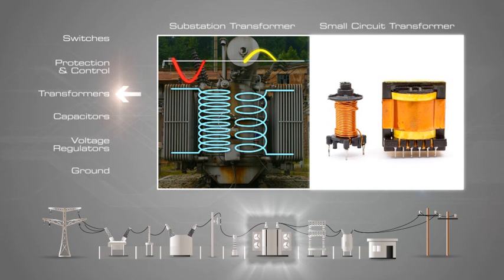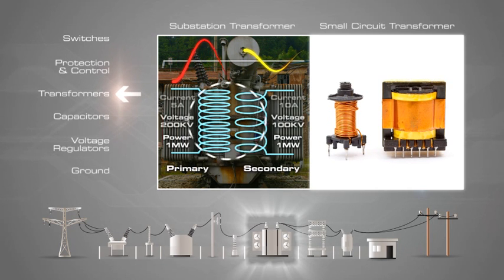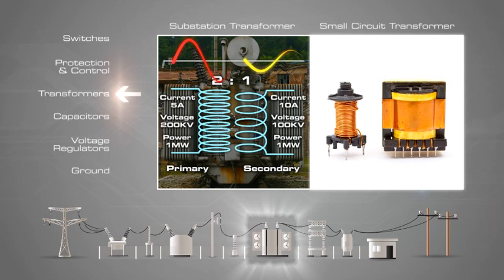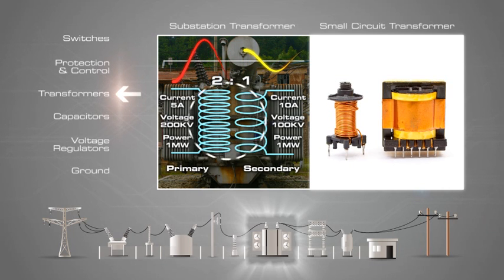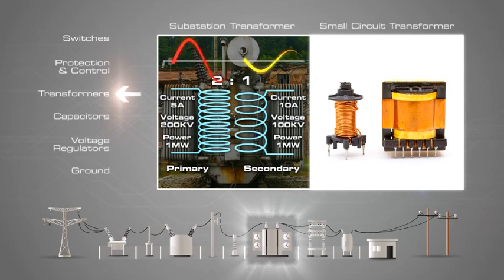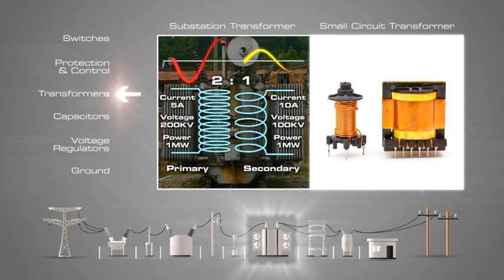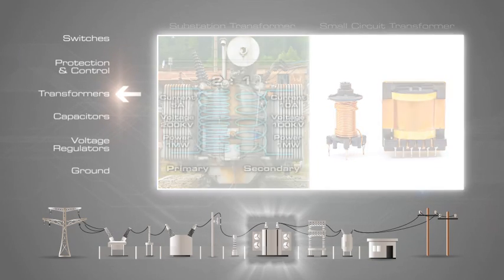A varying current in the first or primary winding creates a varying magnetic flux in the transformer's core, and thus a varying magnetic field through the secondary winding. This varying magnetic field induces a varying electromotive force, or voltage, in the secondary winding. This effect is called inductive coupling.